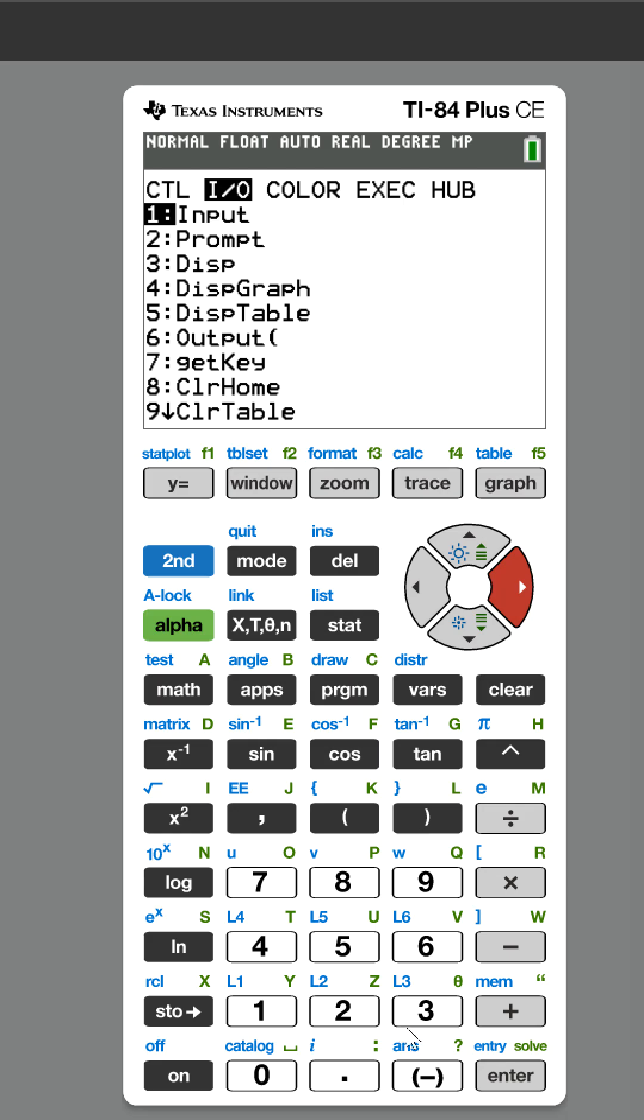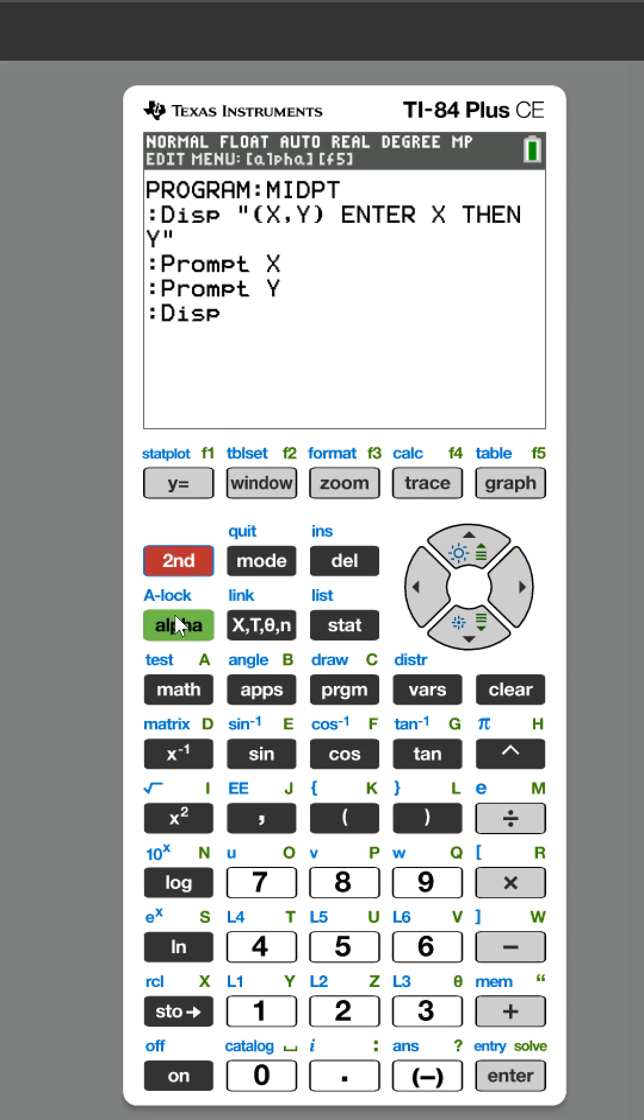Now we need to ask for the second point, so I'm gonna start off with displaying again and we're gonna say second point S-E-C-O-N second P-O-I-N-T and we're gonna call that point UV.